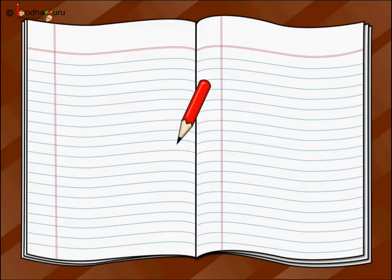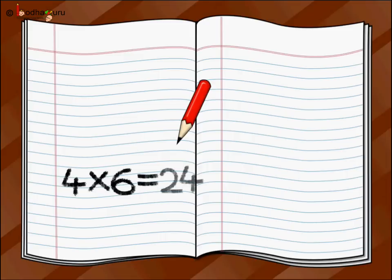So we say 4 multiplied by 6 is equal to 24, or we will require 24 rupees to buy 4 ice creams at 6 rupees each.